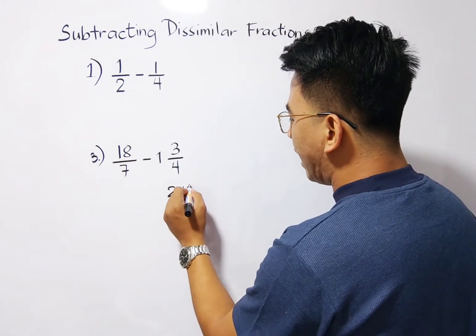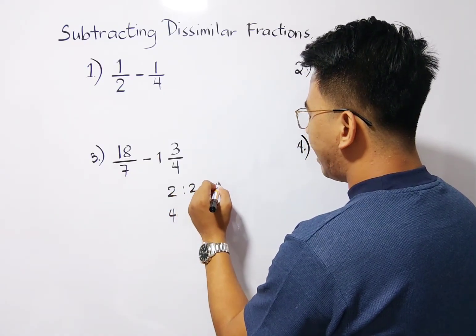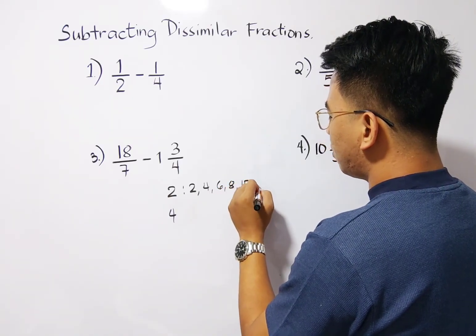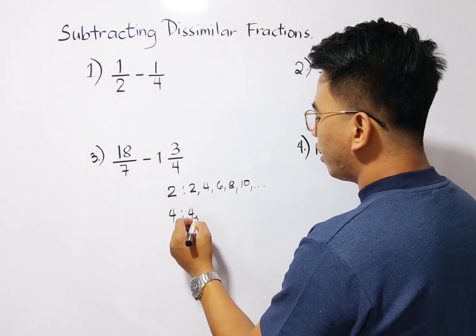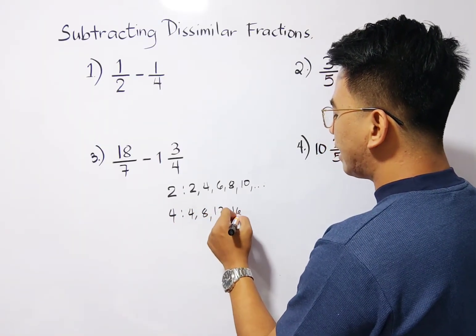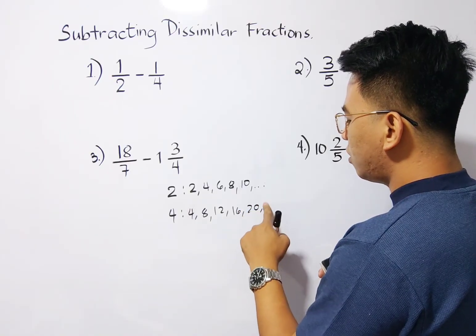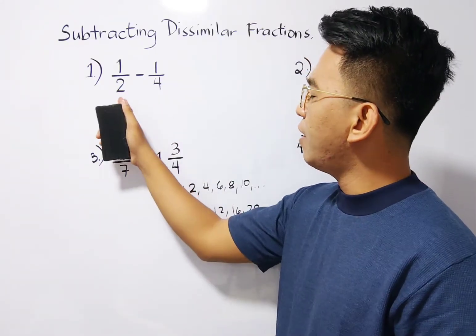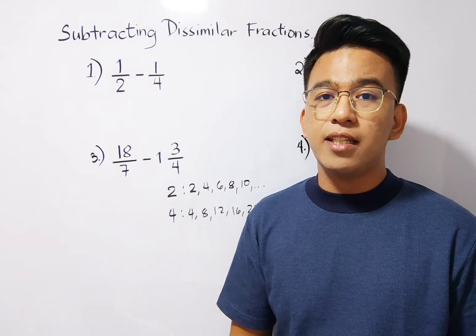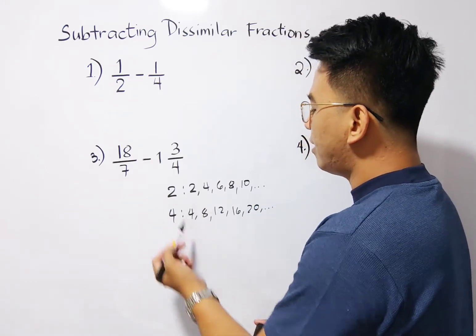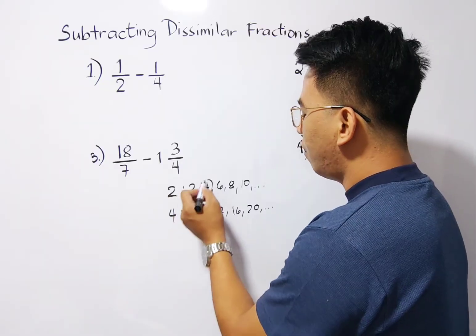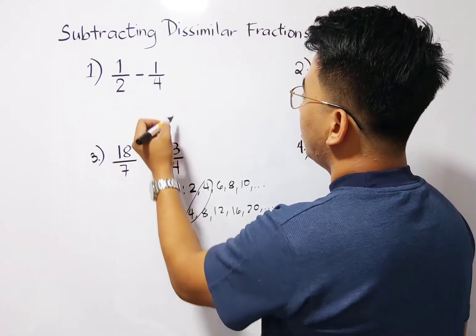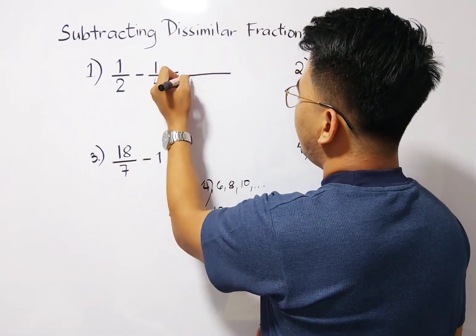So we have the multiples of 2 as 2, 4, 6, 8, 10 and so on. And for 4, we have 4, 8, 12, 16, 20 and so on. So for others, it is easy for you to identify the least common multiple or the LCD of this one. Now, as you can see, listing all the multiples of 2 and 4, we have here 4. So we can consider that this is the least common denominator. So using this, we have the LCD be equal to 4.